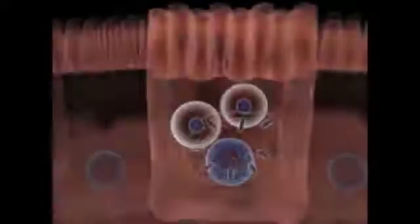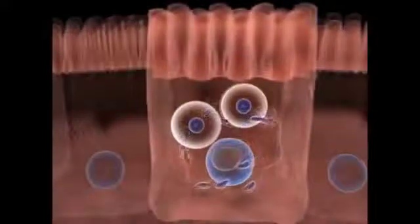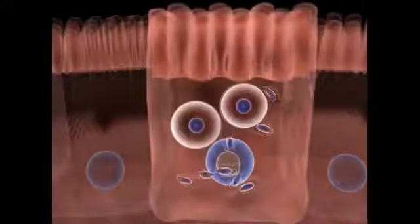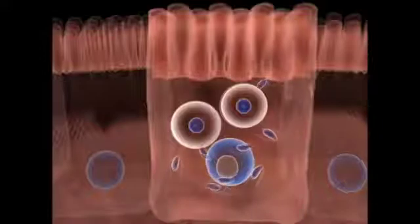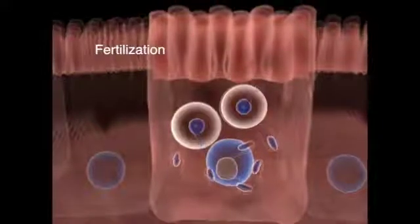It is not known if micro and macrogametes are formed within the same host cell, as shown here, or if they are produced in different cells and the microgamete swims to find a macrogamete.